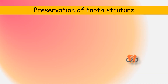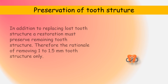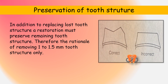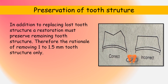Preservation of tooth structure. This first principle can prove to be a big challenge for the beginner. It is important that in addition to replacing the lost tooth structure, a restoration must preserve the remaining tooth structure. Therefore, the importance of removing only 1 to 1.5 mm of tooth structure during our crown cutting procedures.